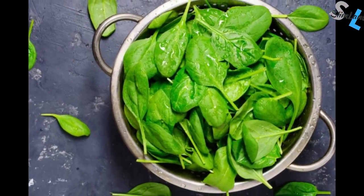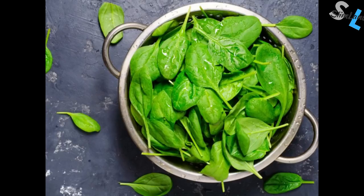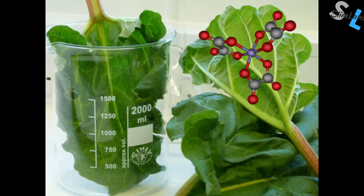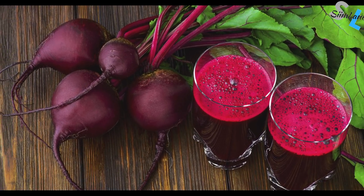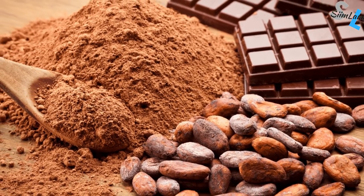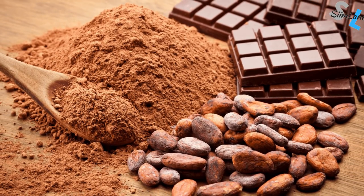Certain foods are higher in oxalates than others. Spinach, Swiss chard, kale, turnip greens, endive, and starfruit. Rhubarb — the roots and leaves of rhubarb are high in oxalates. The leaves are higher in oxalates than the root, but I don't know any people who would actually eat the leaves. Beetroot, including beet greens. Certain grains like buckwheat, okra, amaranth, legumes, and beans. Cocoa powder, surprisingly peanuts, and sweet potatoes.